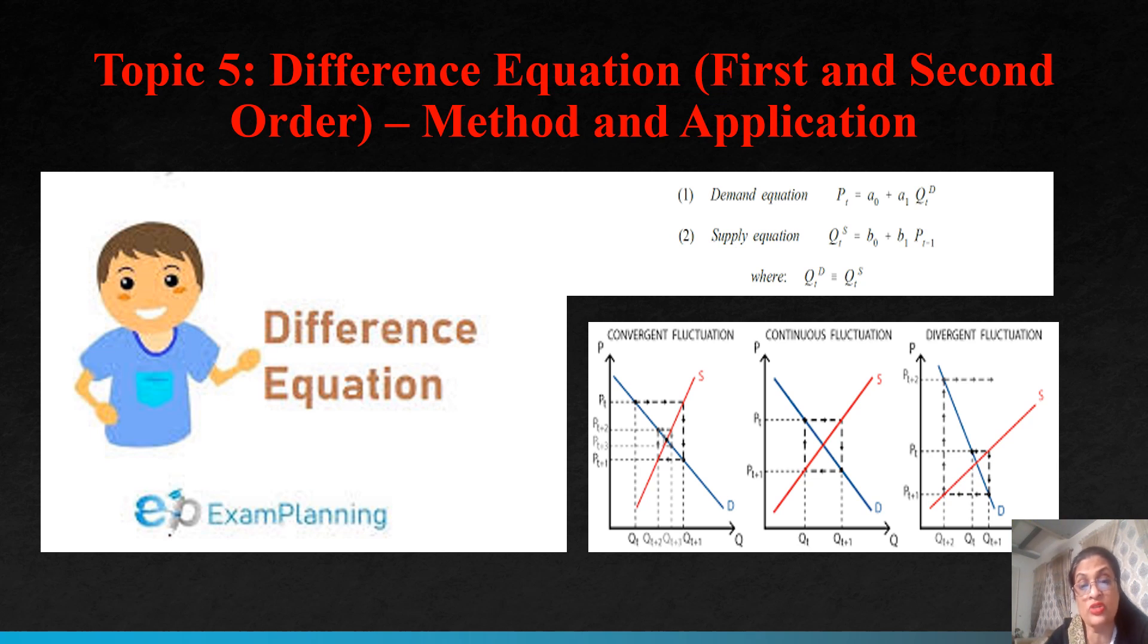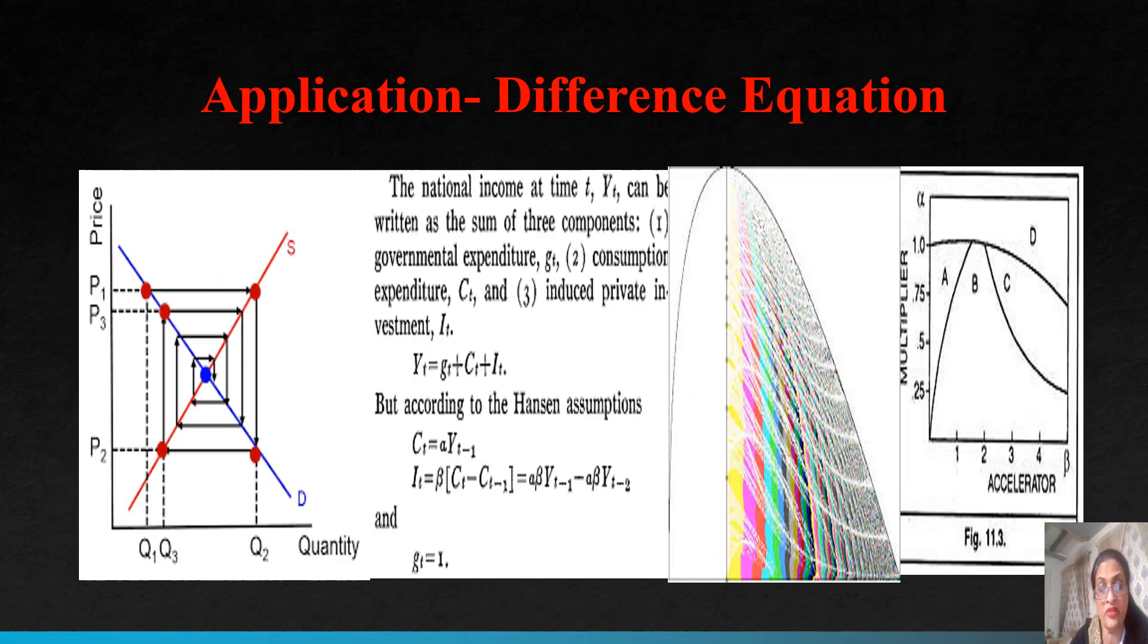So cobweb model will tell you, is it possible to reach from one equilibrium to another equilibrium, or is there any situation when we do not reach to second equilibrium? You must have learned about the Great Depression, you must have learned about many disequilibrium situations. So this model will talk about that if there is any shock in the economy, how would it be? Whether it will go to the second equilibrium, will it come back to original equilibrium, and is there any situation where it will never reach to an equilibrium? This is what we learn by the help of difference equations and with the cobweb model.